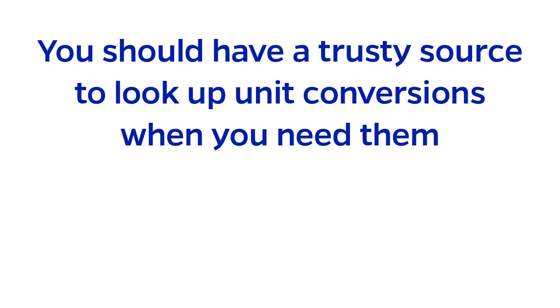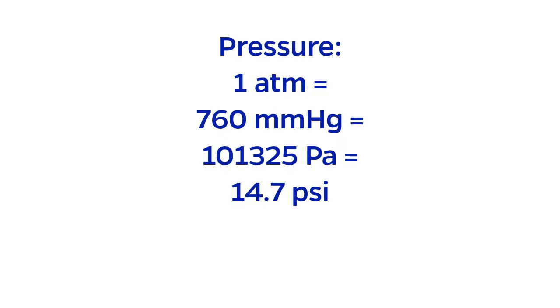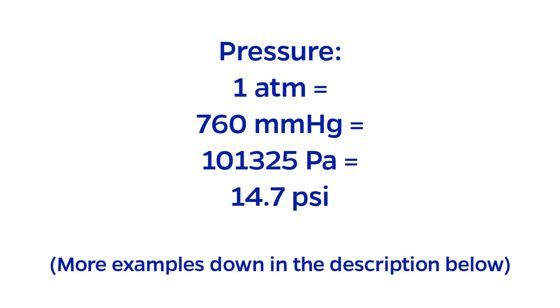As a chemical engineer, of course, the internet will likely always be at your fingertips. However, there are a few unit conversions that are so important that you should know them by heart. Some examples include the units of pressure. One atmosphere is the same as 760 millimeters of mercury, or 101,325 pascals, or 14.7 psi. Check the description below and I'll include some more essential conversions that all chemical engineers should know by heart.